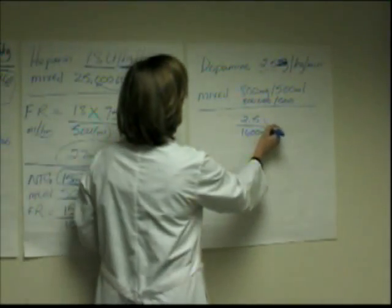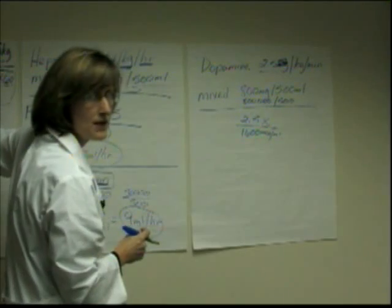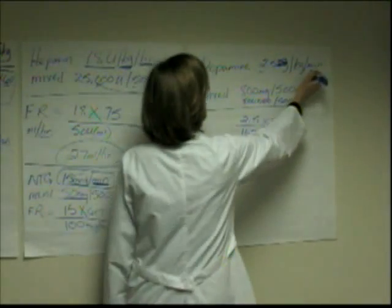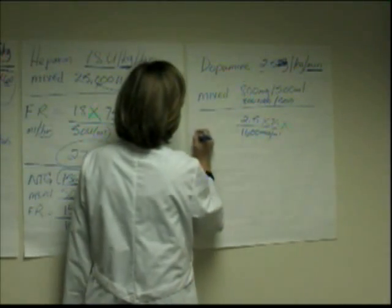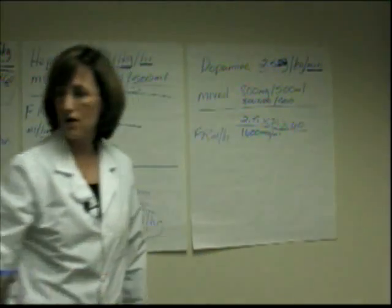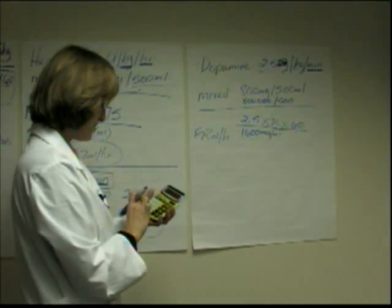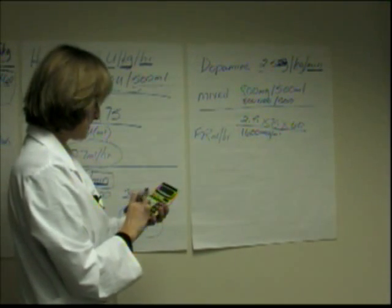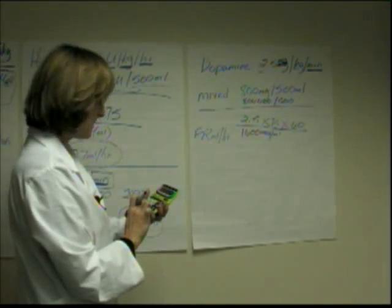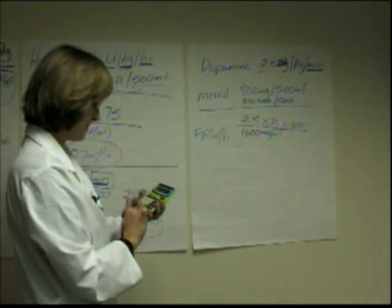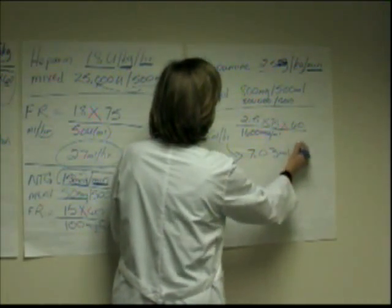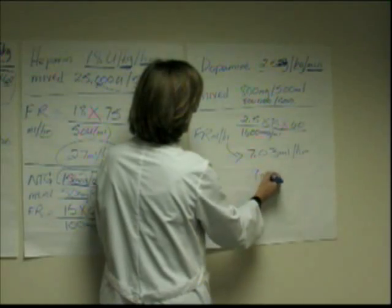Go back to the original equation. Do we need the patient's weight? Yes — it's ordered in kilograms, so it's 75. Do we need the 60 multiplier? Yes — it's ordered in minutes and flow rate is always in milliliters per hour. So: 2.5 micrograms times 75 (patient's weight), times 60, divided by 1600. The answer is 7.03 milliliters per hour, which you can round to a whole number of 7 milliliters per hour.